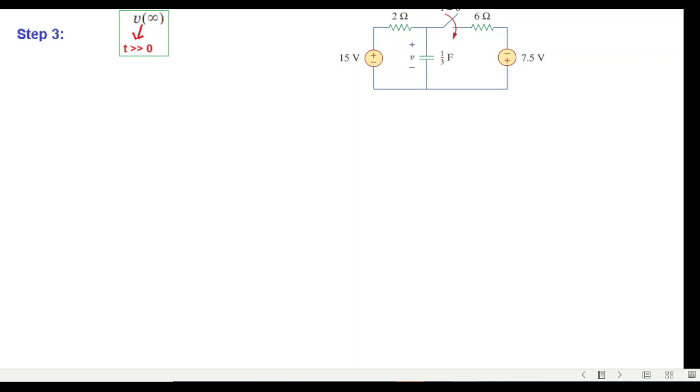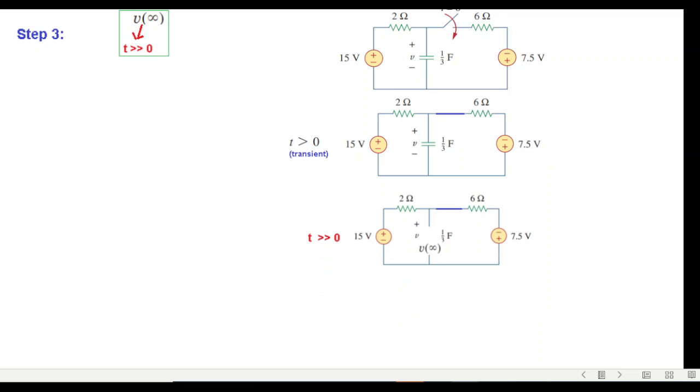First let's move to t greater than zero. Just after we close this switch, at t much greater than zero, the capacitor will be open. So this is the circuit now for t much greater than zero, and we have to find this voltage which we are calling v(∞).